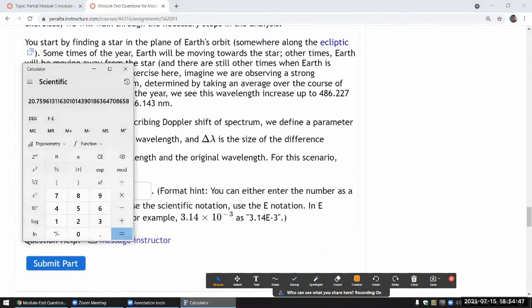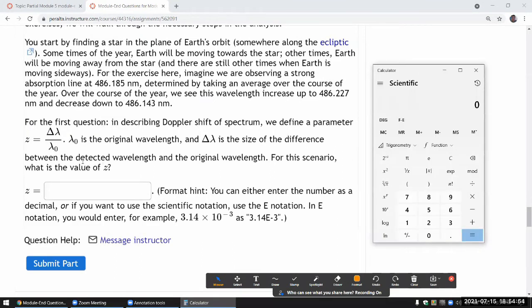Okay, let's do the calculation. So we need the size of the difference between the detected wavelength and the original wavelength. Okay, I guess I will just pick one. 486.227, subtract this number 486.185. That's the difference in wavelength, delta lambda. And divide it by the original wavelength, divided by 486.185.